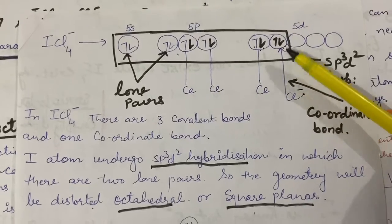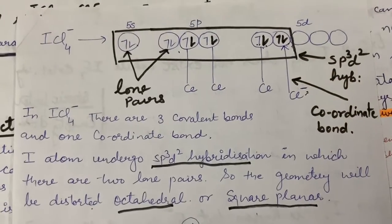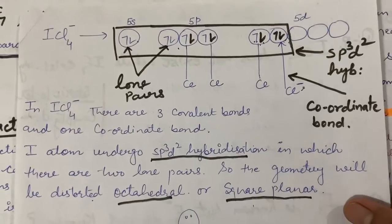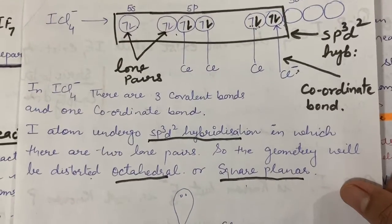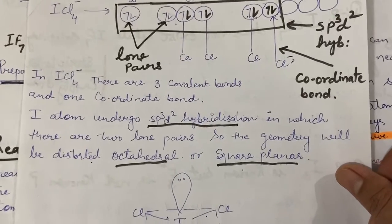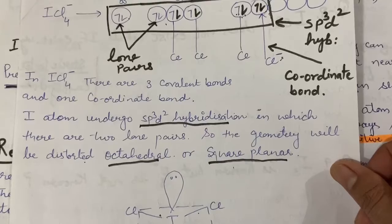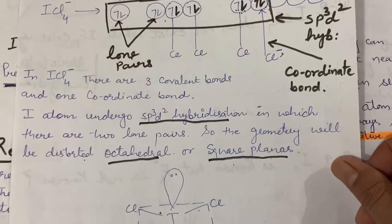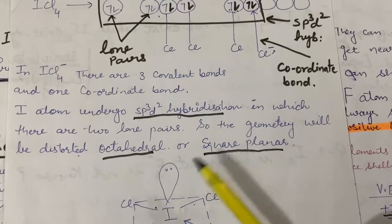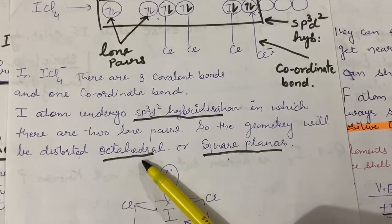On the basis of hybridization, SP³D² hybridization has octahedral geometry, but due to the presence of lone pairs the octahedral geometry gets distorted. The geometry of the molecule will be distorted octahedral. Whenever a lone pair is present in a molecule, the geometry always gets distorted - we call it distorted geometry.